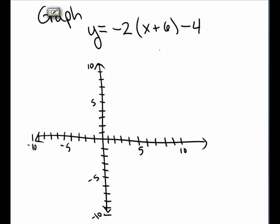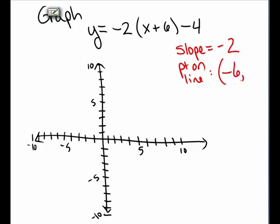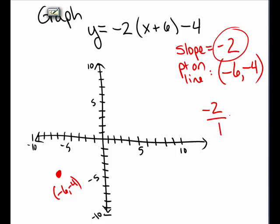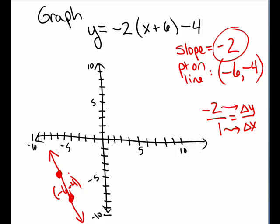I want to graph the line y equals negative 2 times the quantity x plus 6 minus 4. The slope is negative 2, and it passes through the point negative 6 comma negative 4. So I plot the point negative 6, negative 4. Since the slope is negative 2, I can think of that as a fraction — negative 2 over 1 — which tells me we go over 1 as we go down 2. I put my cursor on negative 6, negative 4, go over 1, down 2, and plot another point. So there is a sketch of the line y equals negative 2 times the quantity x plus 6 minus 4.